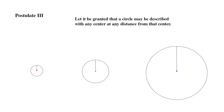Postulate 3: Let it be granted that a circle may be described with any center at any distance from that center. Right here we have the red, green, and blue centers. A line can be drawn from the red center to the edge of the circle, drawn all the way around to form a circle. This line from the center to the edge is called the radius.